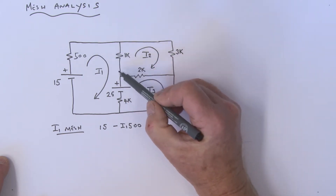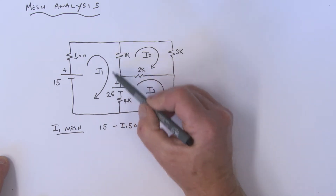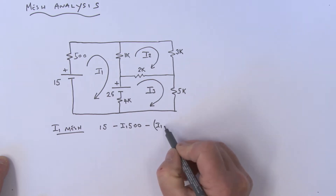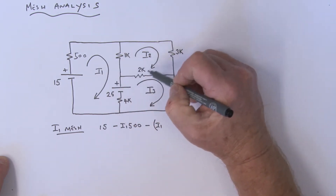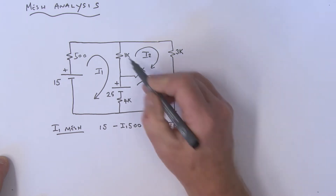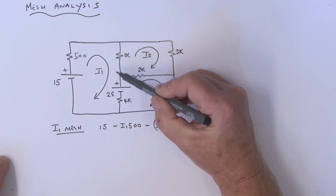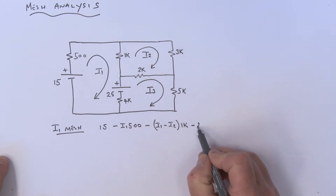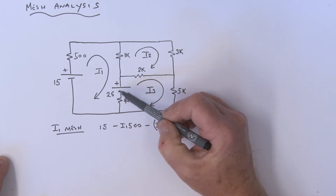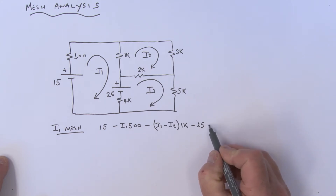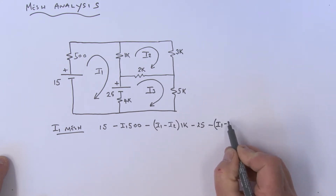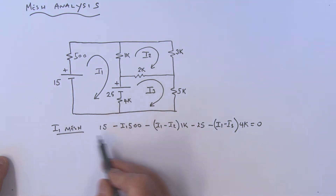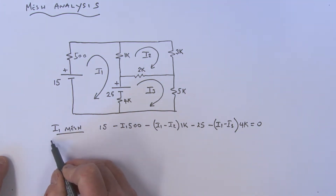We come across this resistor here. We're traversing in the I1 mesh, so I1 leaves - that's a minus, open up a bracket: I1 minus I2, multiplied by 1k. Continuing on, we hit this voltage source - going from a plus to a minus, so that's a minus 25. And then we've got I1 minus I3, so that's a minus (I1 minus I3) multiplied by 4k, all equal to 0. That's our first I1 mesh equation.